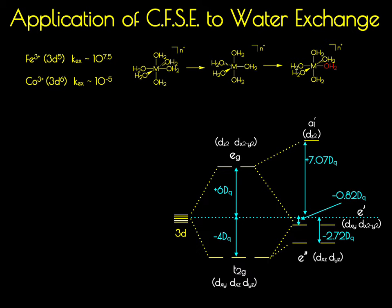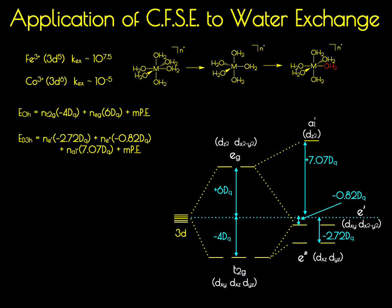We can calculate the energies provided by the crystal field using these equations. The energy provided by the octahedral field is the number of electrons in the T2g set times negative 4dq, plus the number of electrons in the Eg set times 6dq, plus the number of paired electron sets times the pairing energy. For D3h, it's the number of electrons in the E-prime orbitals times negative 2.72dq, plus the number in the A1-prime orbital times 7.07dq, plus the number of paired sets times the pairing energy.